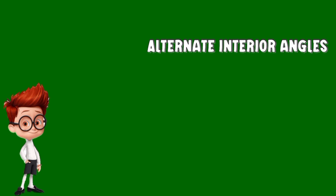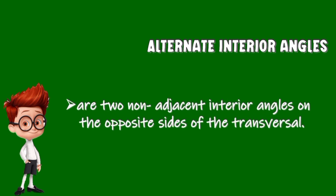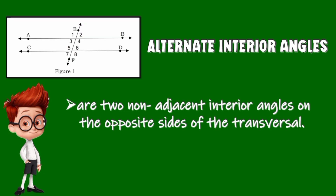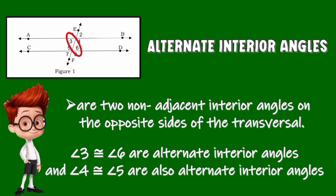Alternate interior angles are two non-adjacent interior angles on the opposite sides of the transversal. Based on the figure, angle 3 is congruent to angle 6 — they are alternate interior angles. Angle 4 is congruent to angle 5 — they are also alternate interior angles.